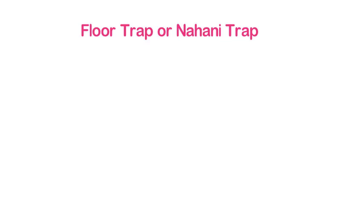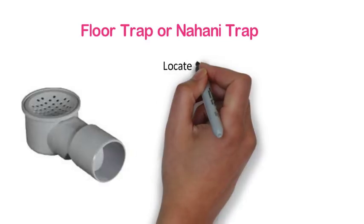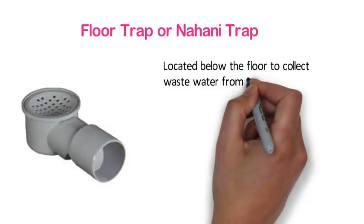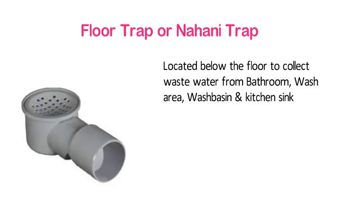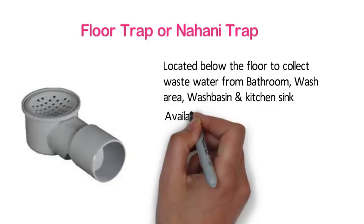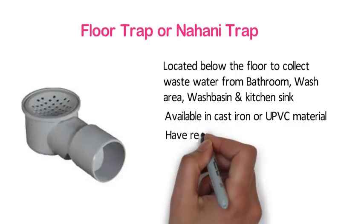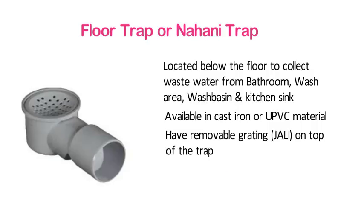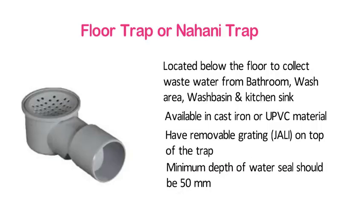Types of traps. Floor trap, or nahani trap. A floor trap is located below the floor to collect waste water from the bathroom, wash area, wash basin and kitchen sink. These are available in cast iron or uPVC material and have a removable grating on top of the trap. The minimum depth of water seal should be 50 mm.